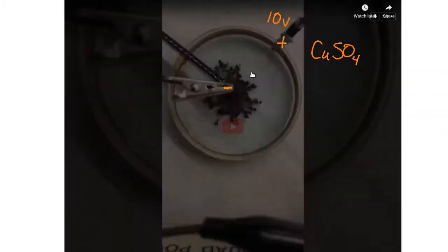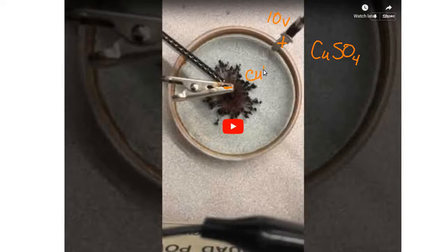And because of this, the positive copper ions are going to be attracted to the center, and the sulfate ions are going to be attracted towards the copper tape that we put on the rim of the petri dish.